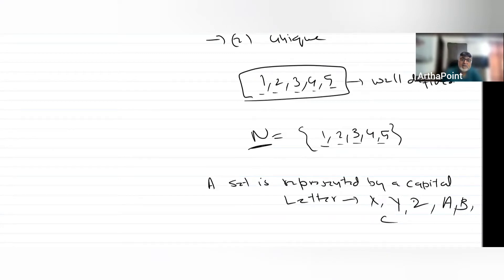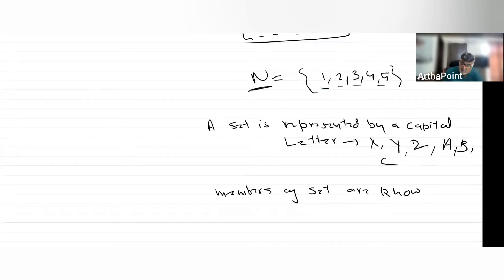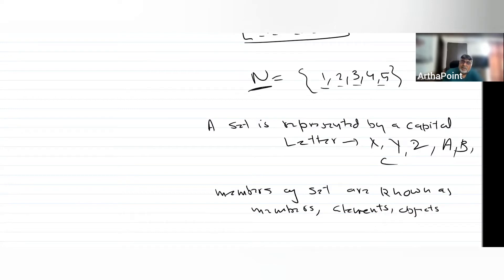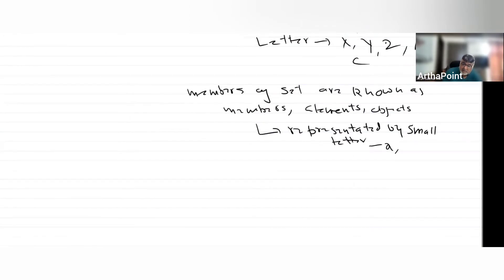These objects are known as the members, elements, or objects of a set. They are represented by a small letter, say x, y, z.